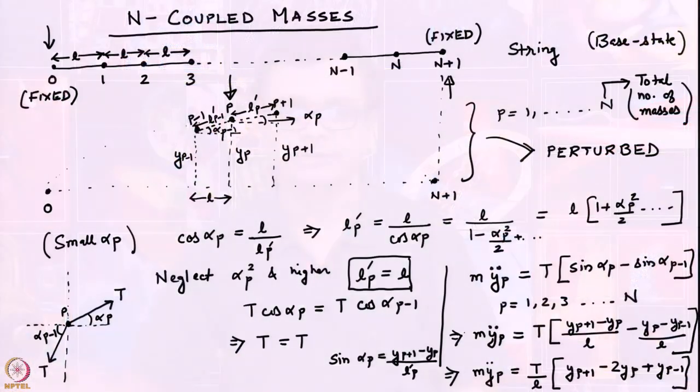Before we proceed further, let us quickly once again summarize what we have done so far. We started with n coupled masses in the base state — they were all under tension, connected through a string. Then we perturbed it, wrote down the equations. The equations were non-linear, so we assumed small angles and linearized about the base state, obtaining equations for perturbation.